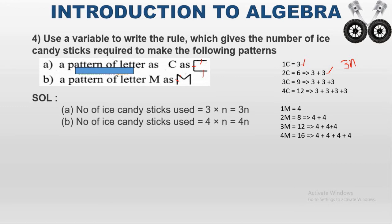The next pattern is M. To make the letter M, 4 candy sticks are used. If I want to make 1 M, 4 candy sticks are used. For 2 M's, 4 plus 4 — that is 4 added 2 times, which is 8. For 3 M's, 4 is added 3 times. For 4 M's, 4 is added 4 times. Since 4 is added repeatedly, the general term can be written as 4n.